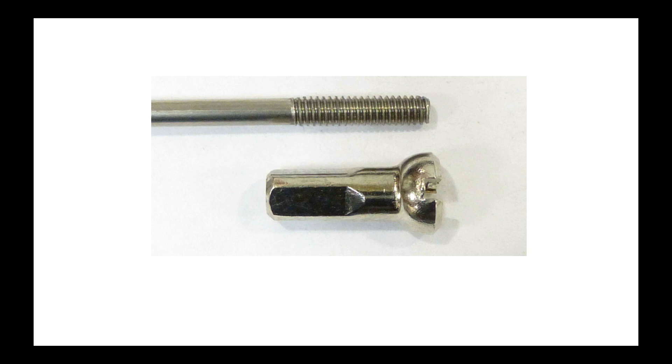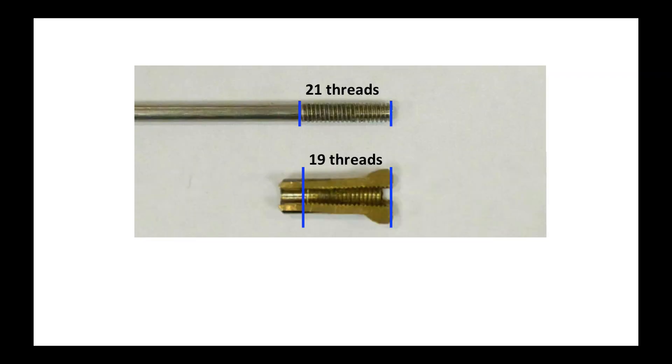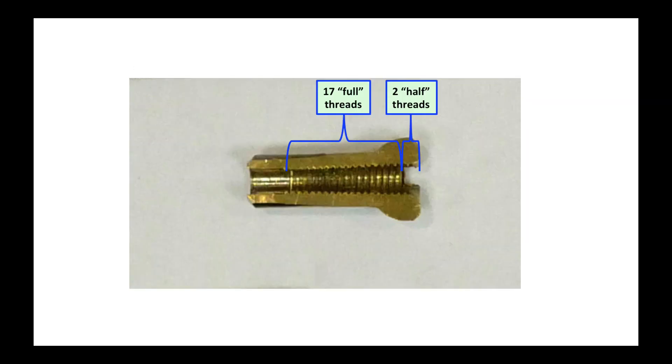Here's a picture of a spoke and a nipple. If we look at the nipple in cross section, we can see that the nipple has 19 threads and the spoke has 21 threads. Of the 19 threads on the nipple, 17 are full threads and two are half threads.